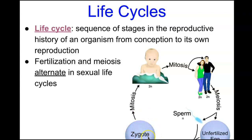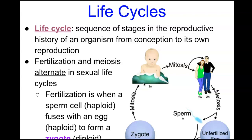From that point, the zygote undergoes mitosis for the organism to grow and develop. Fertilization is when a haploid sperm fuses with a haploid ovum or egg to form a zygote that is diploid.